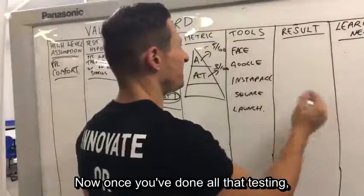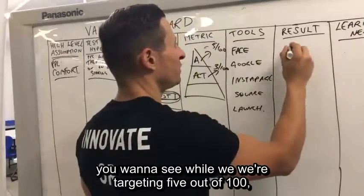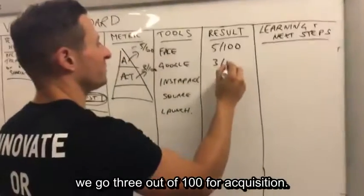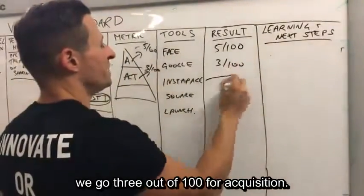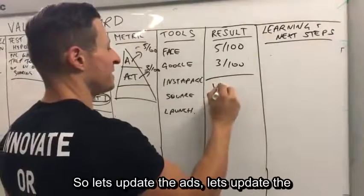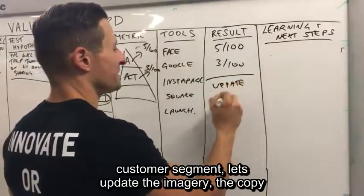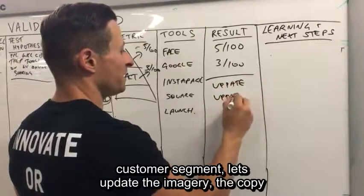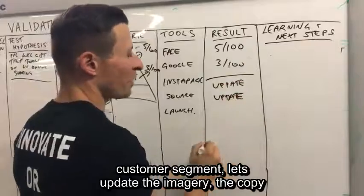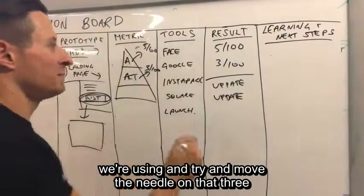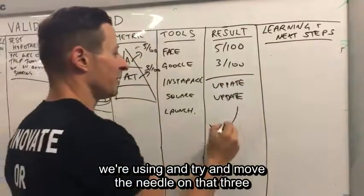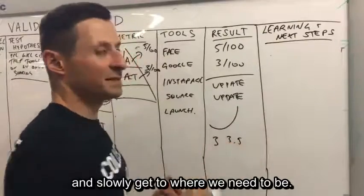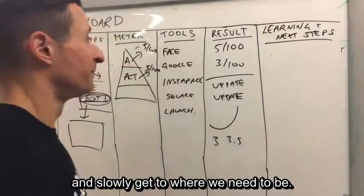Once you've done all that testing, you want to see — well, we were targeting five out of 100 and we got three out of 100 for acquisition. So let's update the ad, update the customer segment, update the imagery and the copy we're using, and try to move the needle on that three, getting it up to maybe 3.5 and slowly getting to where we need to be.